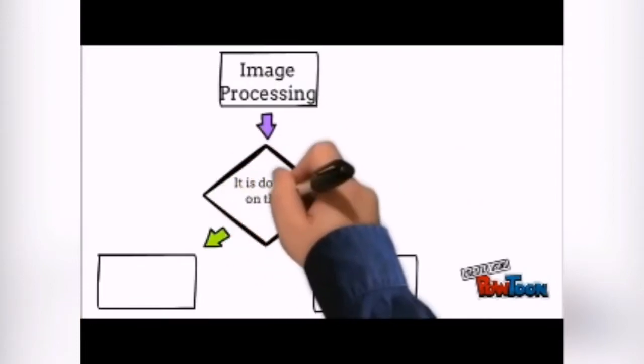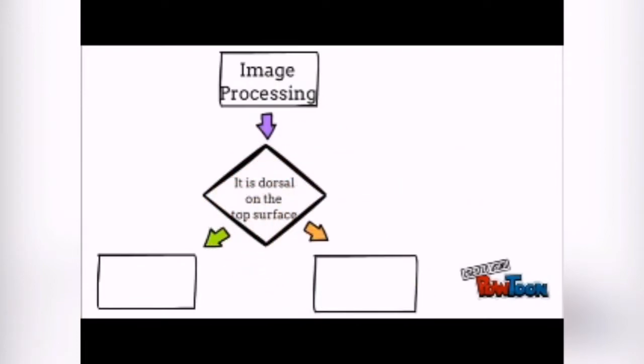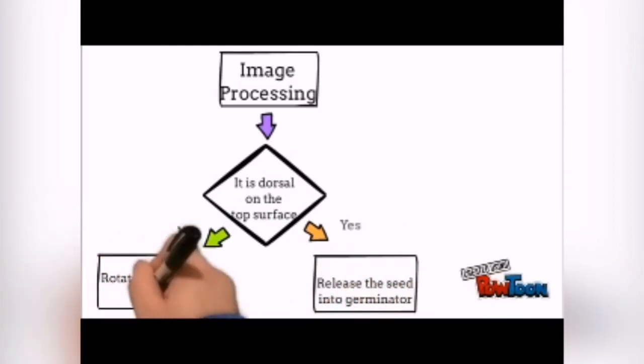If the dorsal surface is facing on top, the seed will be released directly to the container. If it isn't, the seed will be rotated 180 degrees to flip the seed over.